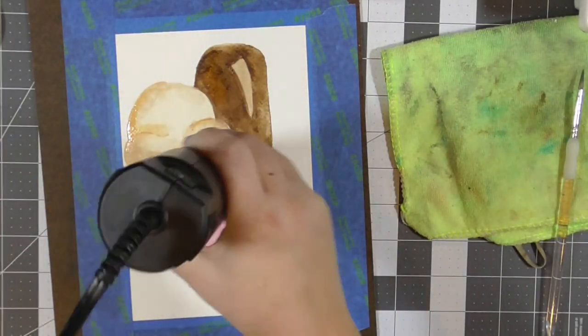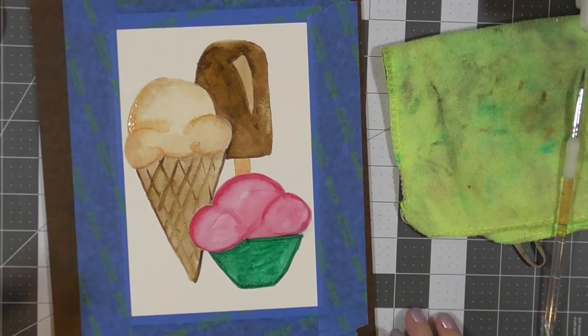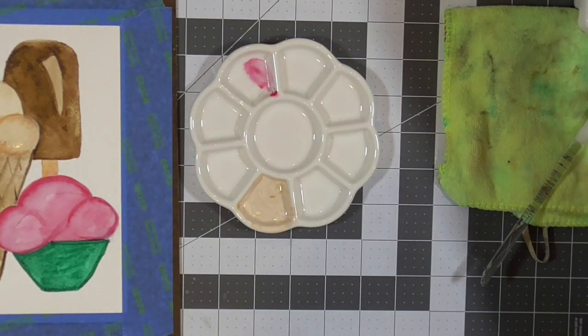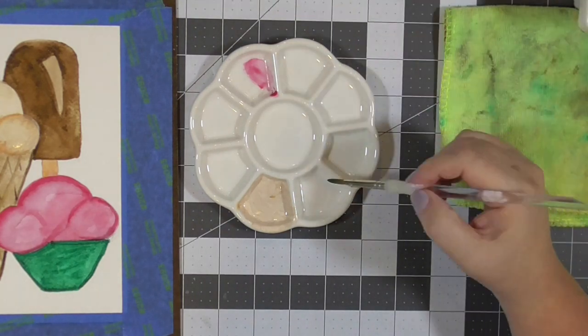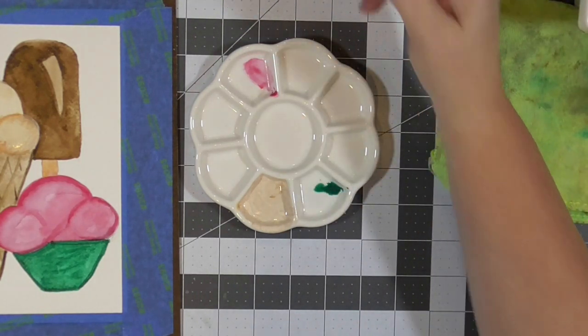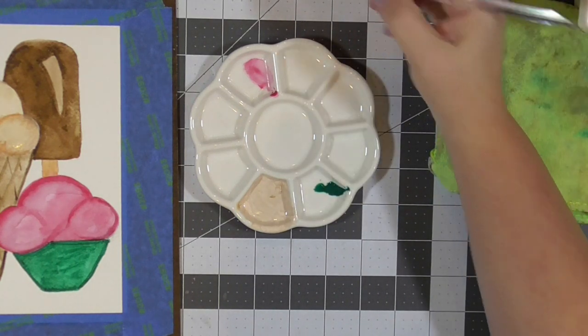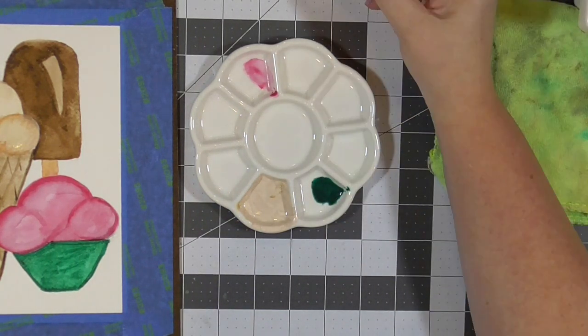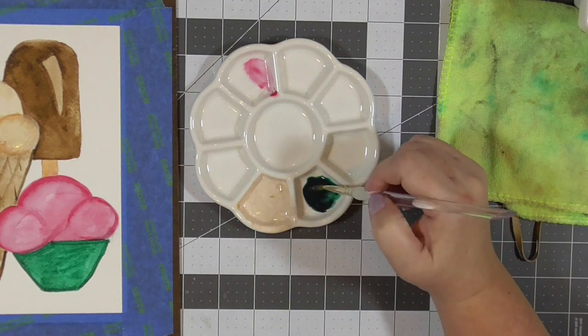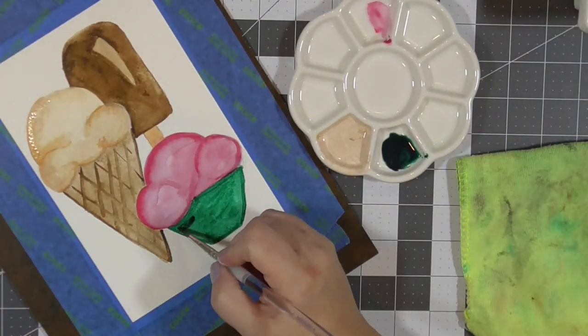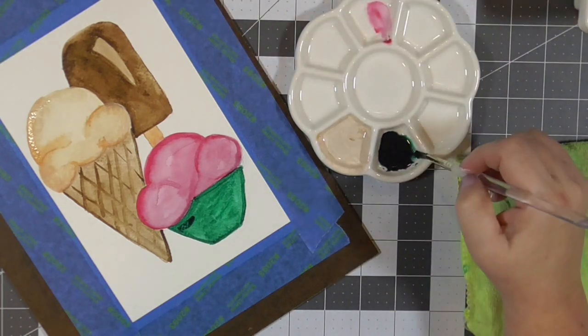So we're going to go ahead and heat set that. I did have my heat tool close in case I needed to dry things while I was working. I can't remember what I'm mixing now all of a sudden. Oh, the green. This is where I remembered that I could add, I could tone down the green to make it more of a shadow by adding the gray. So I did, I put some green pigment in there. I put some gray pigment in there. I added a lot of water to thin it out.